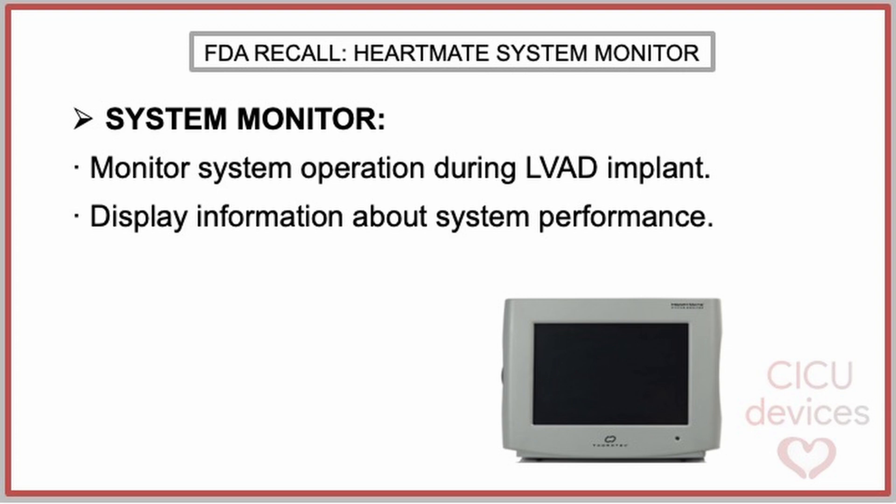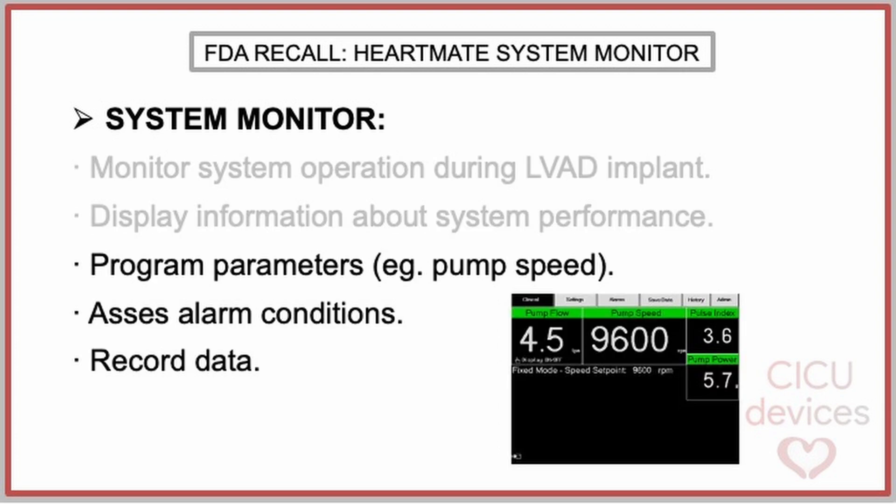The system monitor displays information about system performance, including current operating mode, pump flow, pump speed, and overall operational status. It is also used to program system parameters such as pump speed, assess and track alarm conditions, view and save performance data, and record data at specific intervals for review and analysis.